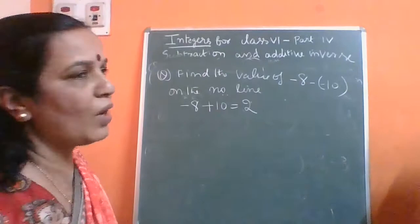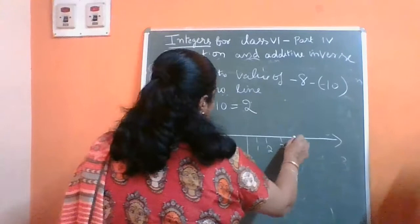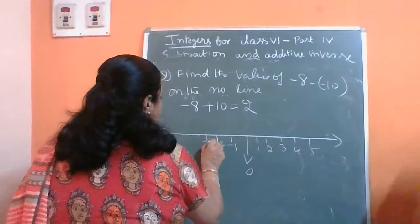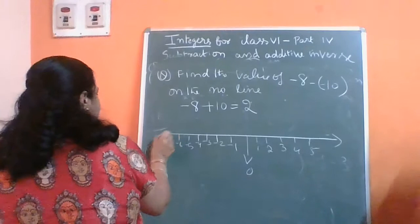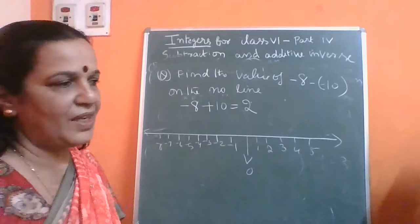First, draw a number line with 1, 2, 3, 4, 5 on the right side and minus 1, minus 2, minus 3, minus 4, minus 5, minus 6, minus 7, minus 8 on the left side. Start at minus 8 and from there add plus 10, moving 10 steps to the right: 1, 2, 3, 4, 5, 6, 7, 8, 9, 10 steps, and you arrive at plus 2.